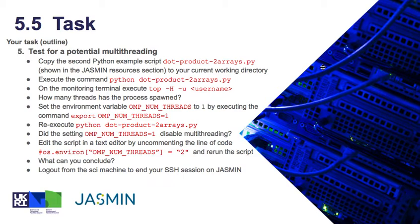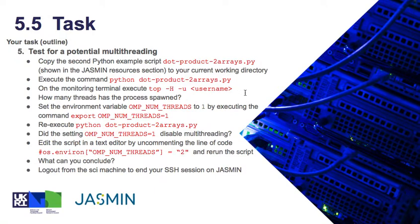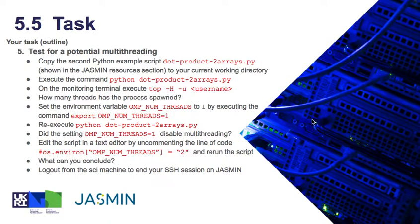The last section of the task is to test for potential implicit multi-threading. You need to copy the second example script, dot_product_array.py, into your current working home directory. Execute the script and monitor the resources. This time use the option H with top, which will display if there is any threading — check and see if there are any threads. Then set the environment variable OMP_NUM_THREADS to 1 from the command line by doing an export as shown. Rerun the script, check the monitored resources, and find out if this has disabled the threads.